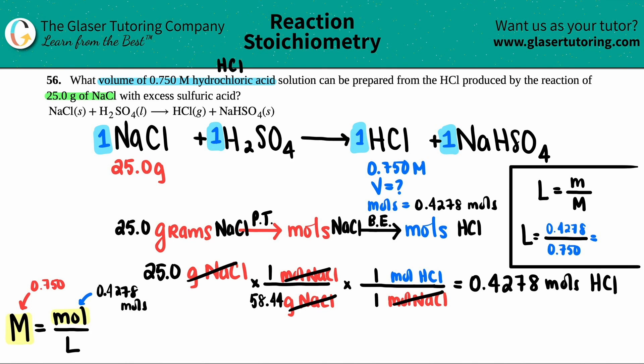And that's it guys. 0.4278 divided by 0.75. I'm looking at my sig fig purposes. I should have three sig figs. So 0.570 liters. And that is your final answer. So roughly a little bit more than half a liter. So you needed 0.570 liters of this solution that needs to go with 25 grams of sodium chloride. And that's it.